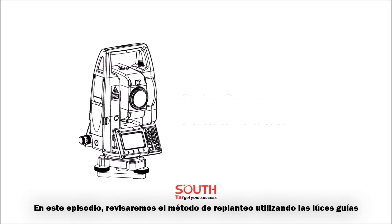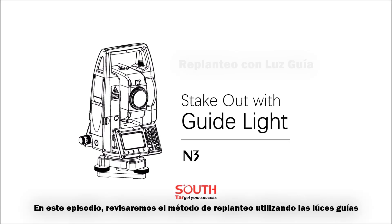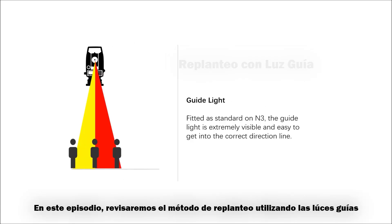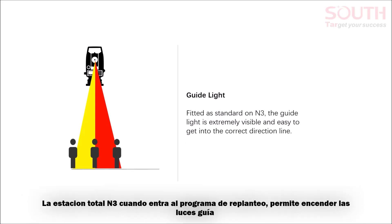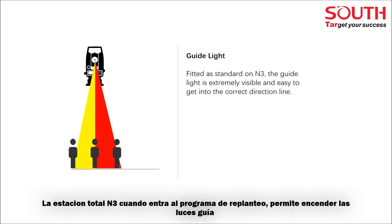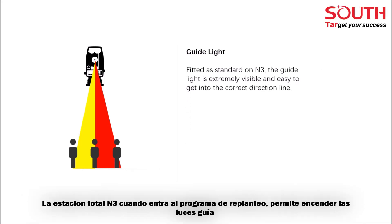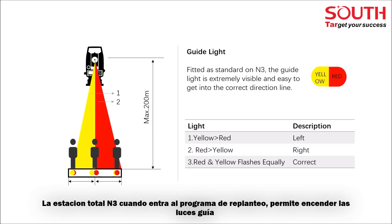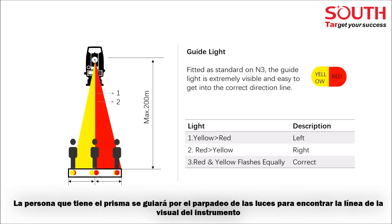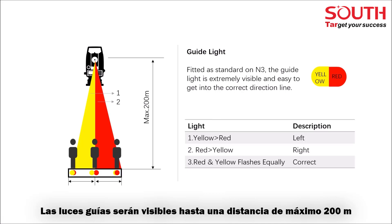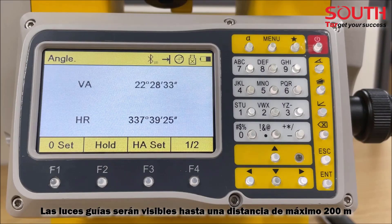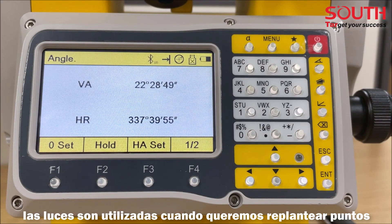In this video, we will look at how to stake a point with guide light using the N3 total station. When you enter the program, you can open the guide light. The person at the prism can be guided by the flashing lights directly to the line of sight. The light points are visible up to a distance of maximum 200 meters.